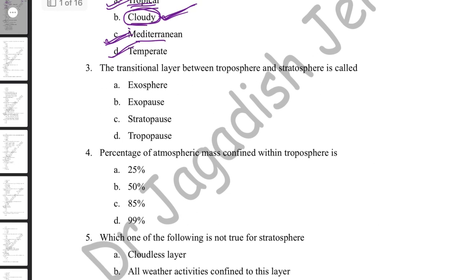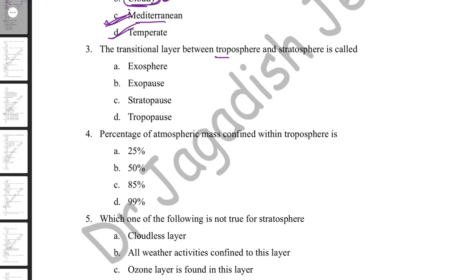The transitional layer between the troposphere and stratosphere is the tropopause. Moving outward from mean sea level: troposphere, tropopause, stratosphere, stratopause, mesosphere, mesopause, thermosphere. An interesting fact is that in the pause layers — tropopause, stratopause, mesopause — there is no change in temperature. In the troposphere, temperature decreases with altitude at a certain lapse rate, but in the tropopause, temperature does not decrease with altitude.